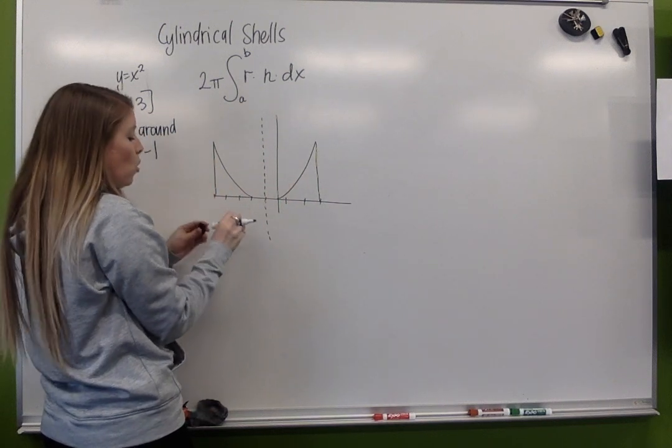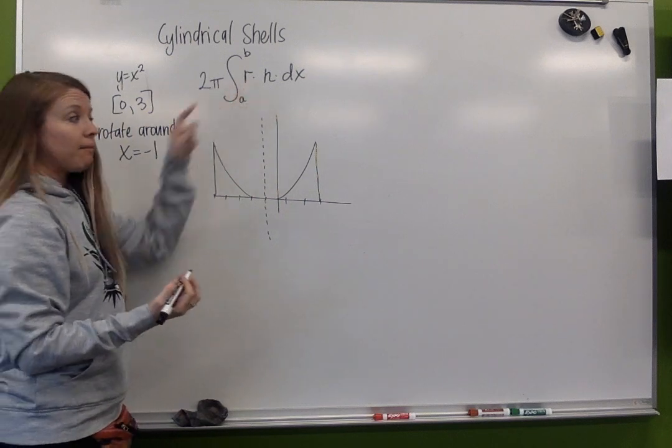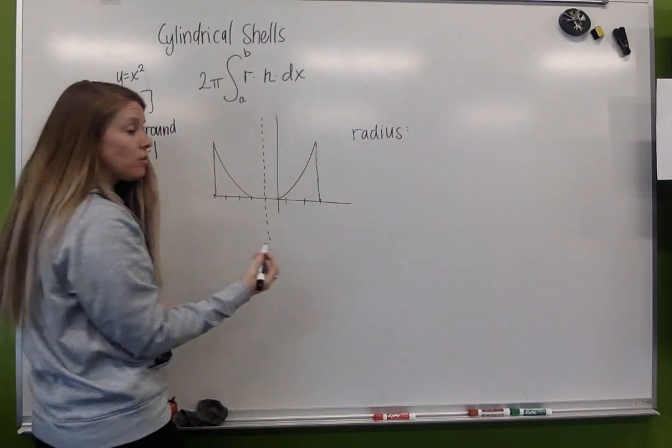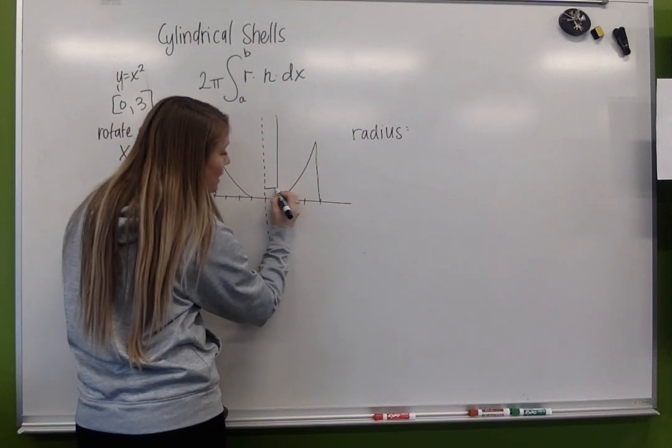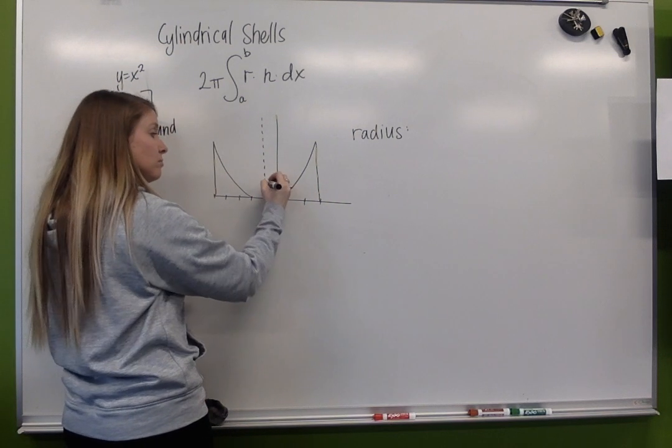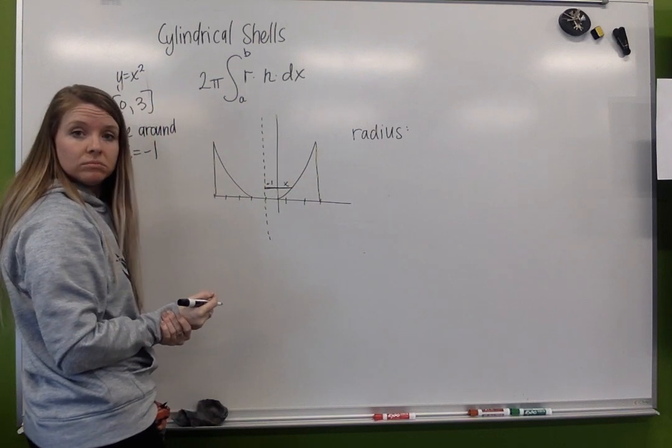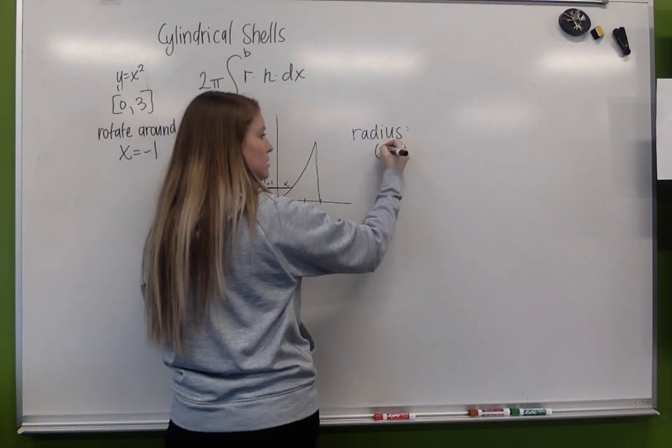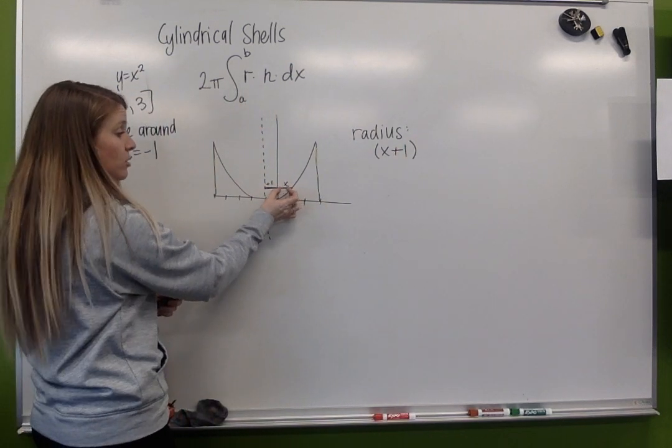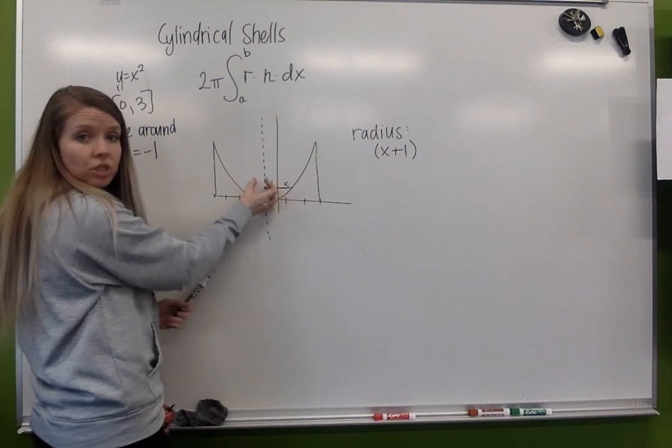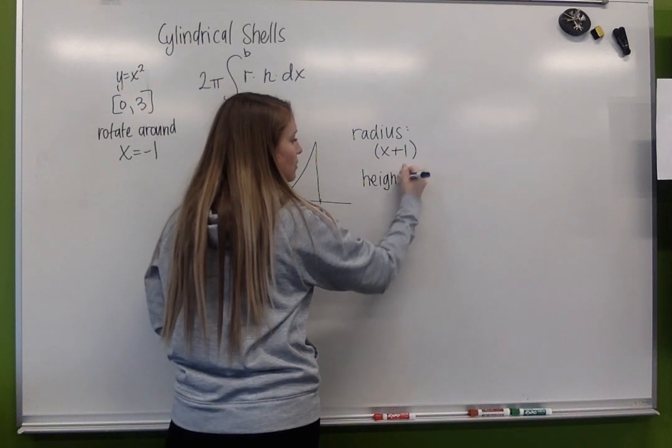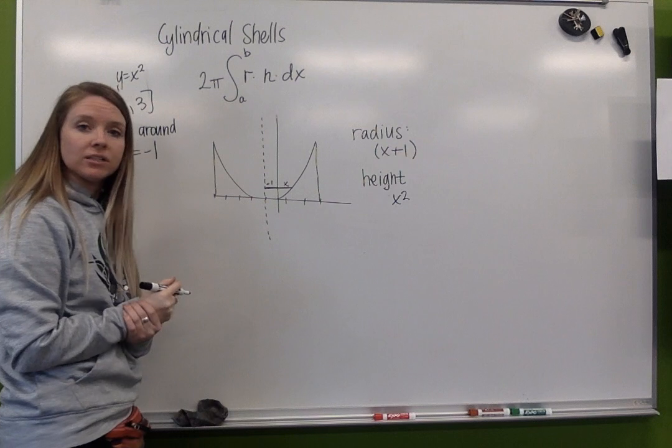What I need to know? My radius. Based off of our line of rotation, my radius, wherever I hit, this piece right here is x plus 1. So my radius is x plus 1. That's it. X value plus that 1 unit of distance. My height is still x squared.